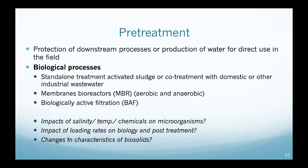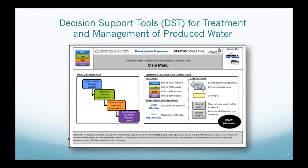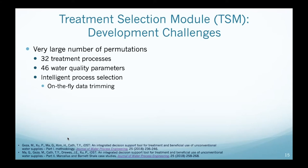Now I'll go through a few past and ongoing projects for treatment of produced water, giving examples of both solutions and challenges. I'll start with the decision support tools we developed — a very interesting computer tool that takes water quality and quantity as inputs, automates the suggestion of treatment processes, and then looks at beneficial use and economics. We developed two versions: one originally for coalbed methane, later extended to shale gas and oil.